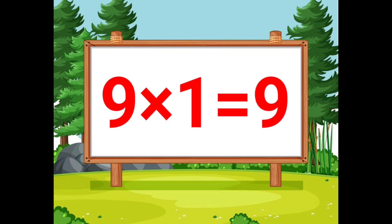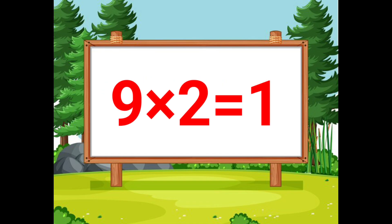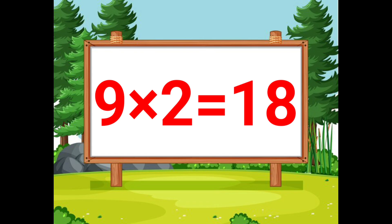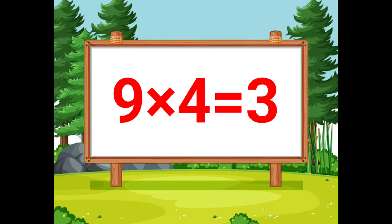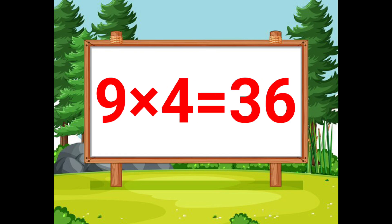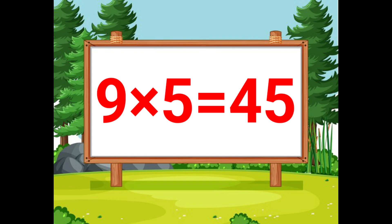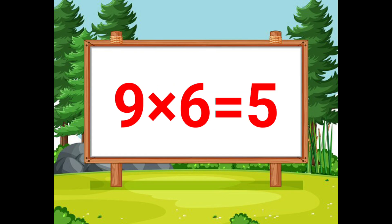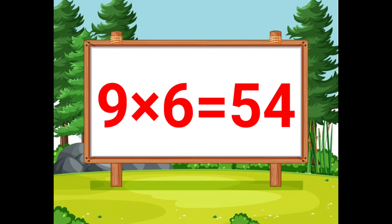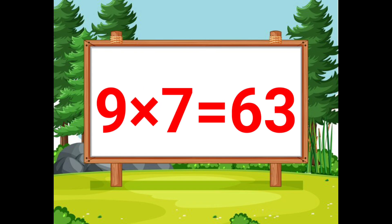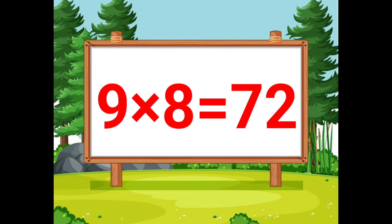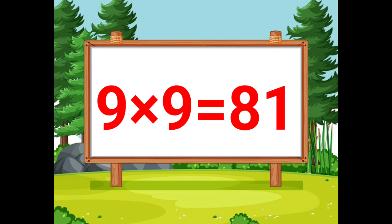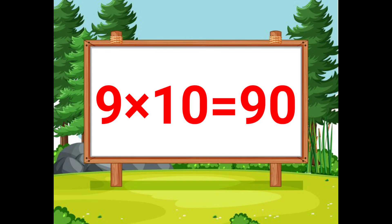9 ones are 9. 9 twos are 18. 9 threes are 27. 9 fours are 36. 9 fives are 45. 9 sixes are 54. 9 sevens are 63. 9 eights are 72. 9 nines are 81. 9 tens are 90.